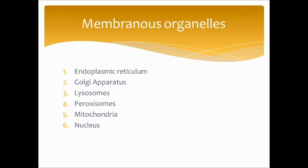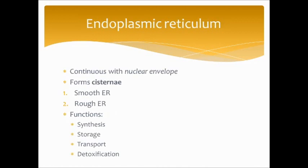First is the endoplasmic reticulum. It is continuous with the nuclear envelope, so it has direct contact with the nucleus. The endoplasmic reticulum forms cisternae, which are hollow tubes and chambers. The endoplasmic reticulum can be split up into the smooth endoplasmic reticulum and the rough endoplasmic reticulum.